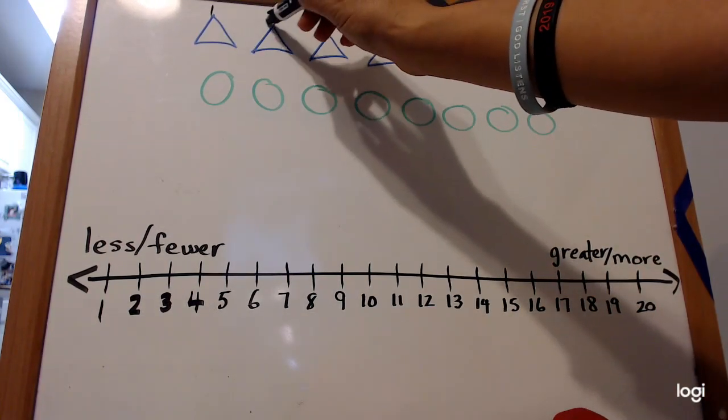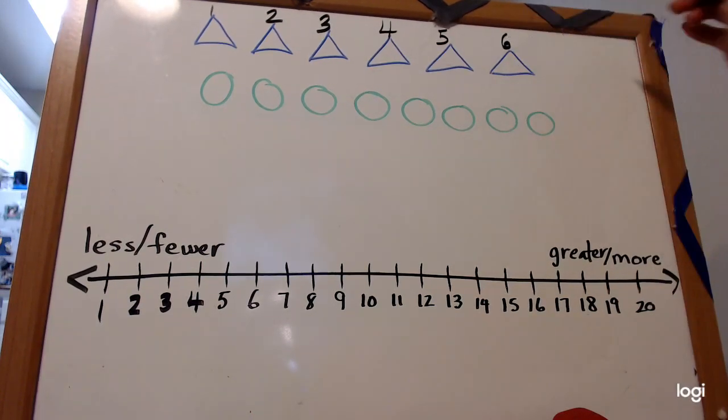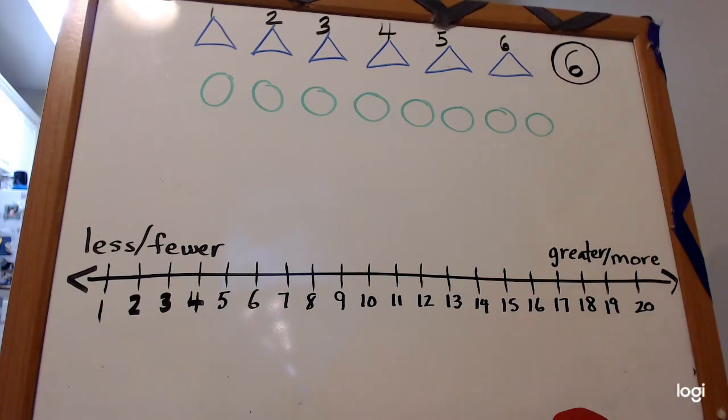So let's count them. One, two, three, four, five, six. And then we write the total and we circle it, right?